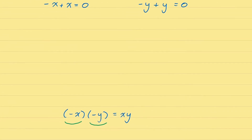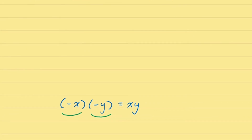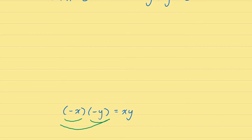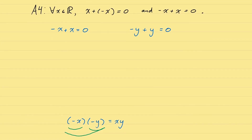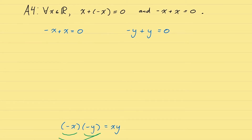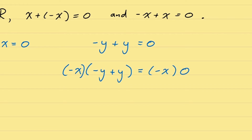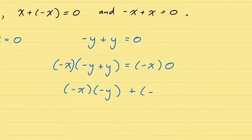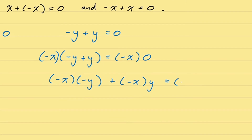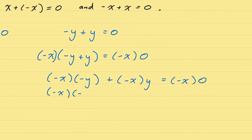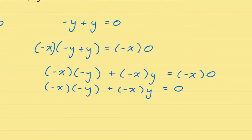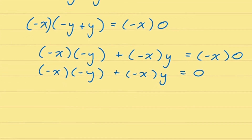Looking at the statement we're trying to prove — negative x times negative y equals xy — we can notice it has the term negative x multiplied by negative y. Somehow we're going to need to introduce that into our equation. One way to do this is to take our equation that says negative y plus y equals 0 and multiply both sides by negative x. By distributing the negative x, we get our term negative x times negative y. Our equation is now negative x times negative y, plus negative x times y, equals negative x times 0. From Proposition 1, we know that negative x times 0 is 0, so we now have: negative x times negative y, plus negative x times y, equals 0.